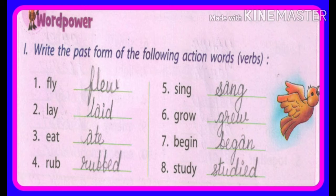Word power. First one: Write the past form of the following action words — verbs. Action words को verbs कहते हैं. तो हमें क्या करना है? यहाँ पे जो नीचे दिया गया है, उनका हमें past form लिखना है.